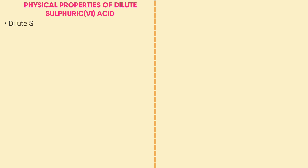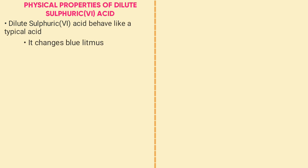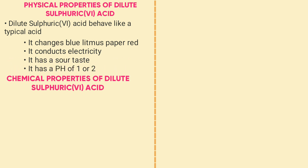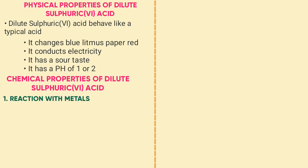Physical properties of dilute sulfuric acid: note that dilute sulfuric acid behaves like a typical acid. Physical properties include: it turns blue litmus paper red; it conducts electricity due to the presence of mobile ions; it has a sour taste; it has a pH of 1, 2, or 3. Chemical properties of dilute sulfuric acid include reaction with metals. Example: Zn + H₂SO₄ → ZnSO₄ + H₂ gas.